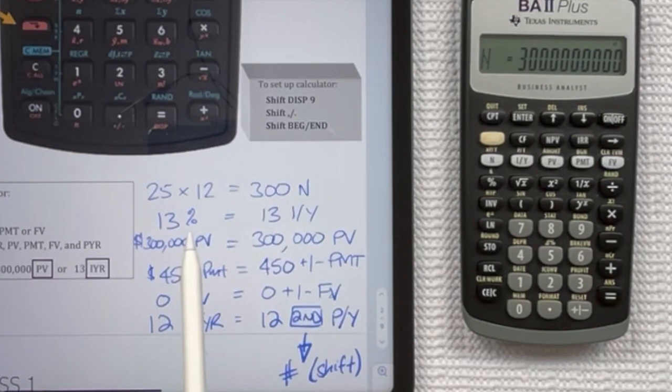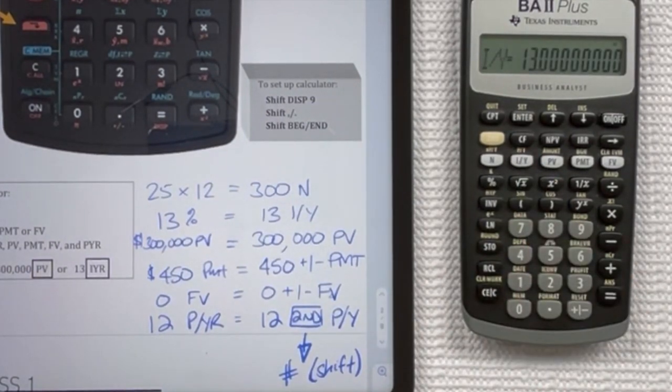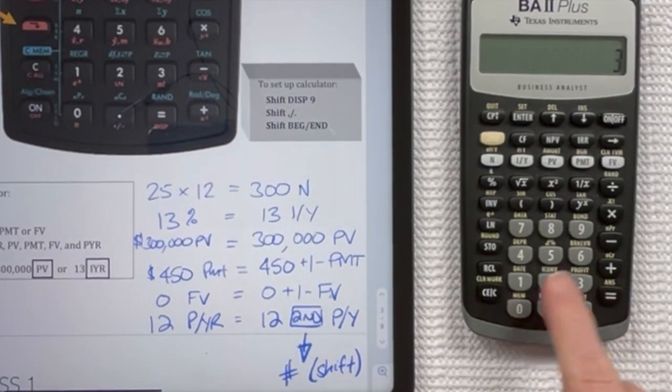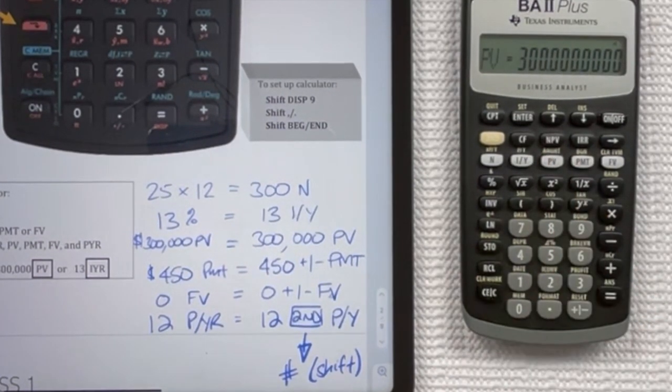If you had 13% mentioned in the question, and you wanted that to go in your IYR, you would press 13 and then IY. $300,000 in your PV, that's what you were going to borrow. You would press 300,000 and then push your PV key.